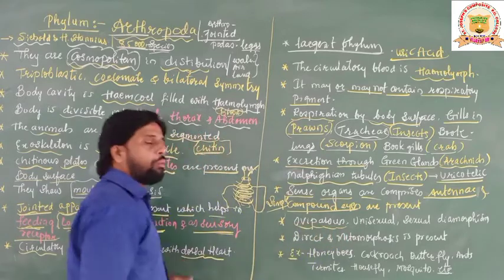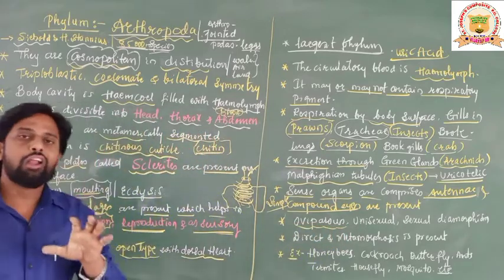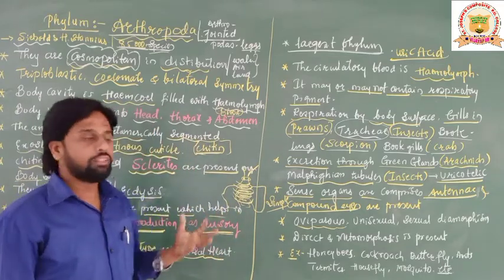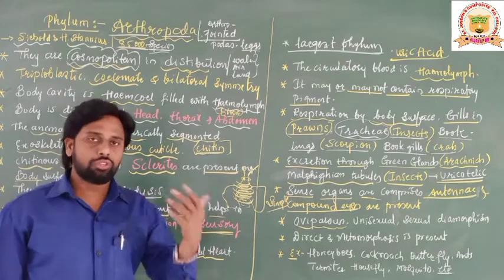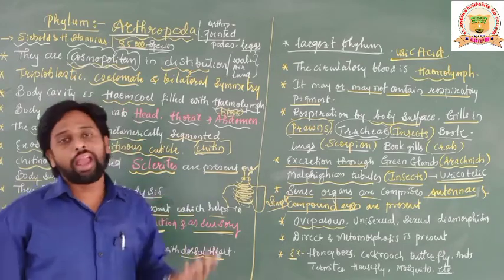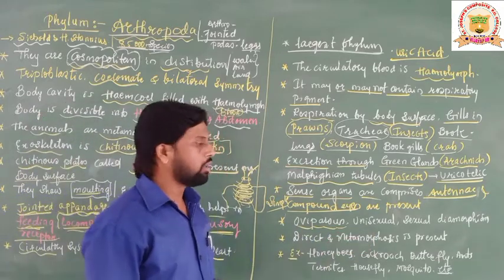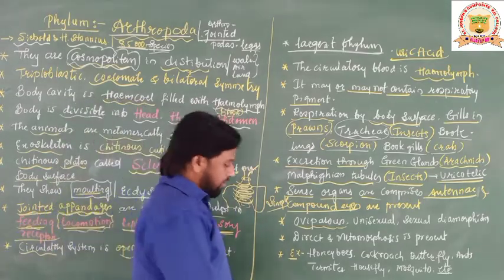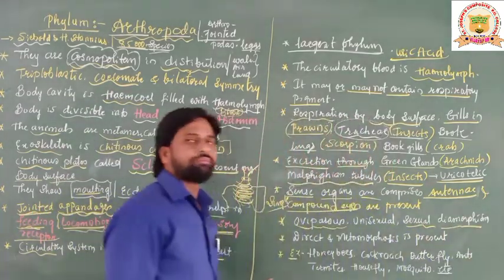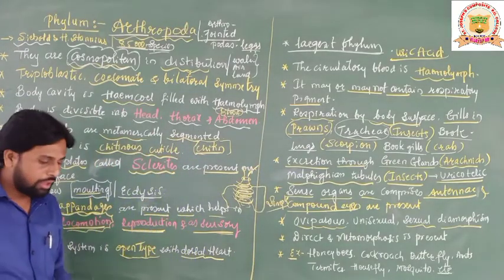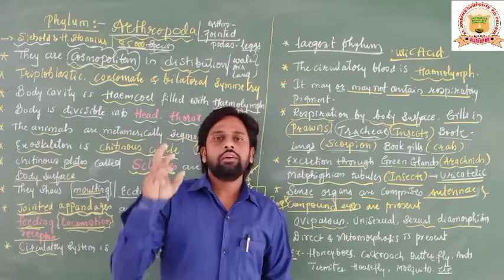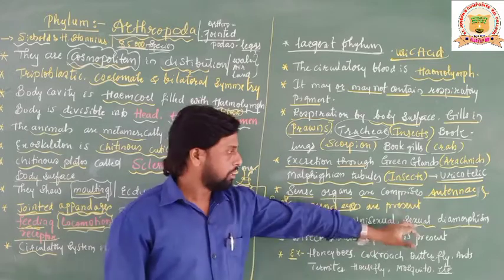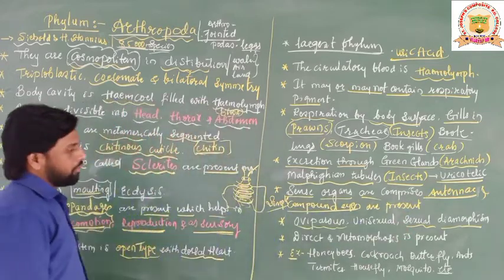These animals are oviparous — they lay eggs. They are unisexual, having separate sexes, and they show sexual dimorphism, meaning the sex of the organism can be identified by its external morphological features.